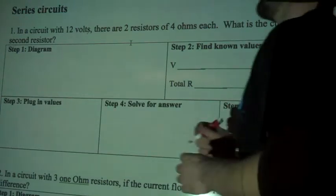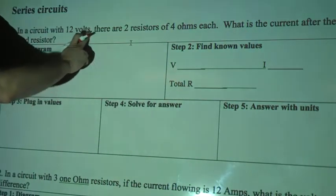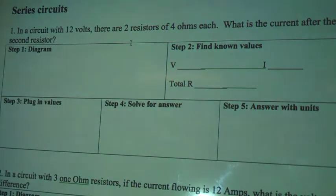In a circuit with 12 volts, there are two resistors of 4 ohms each. What is the current after the second resistor?